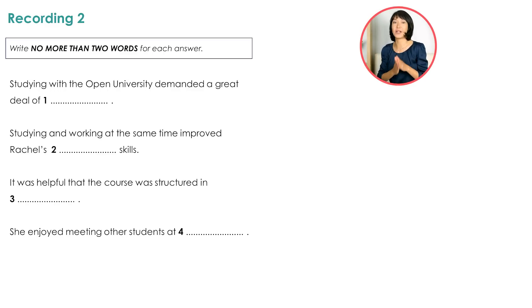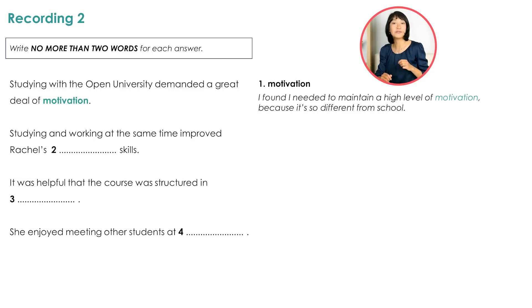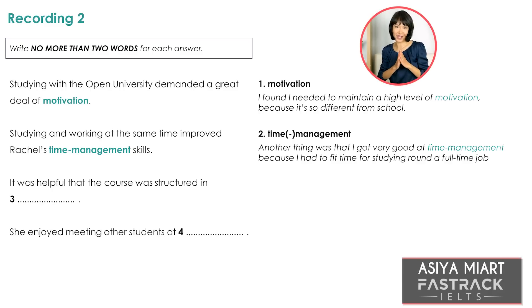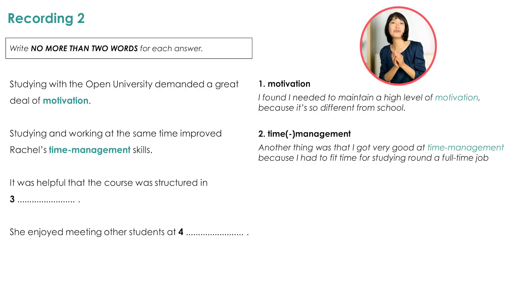Let's check the answers. Number one: Rachel said, I found I needed to maintain a high level of motivation because it's so different from school. The correct answer is motivation. Number two: Another thing was that I got very good at time management because I had to fit time for studying around a full-time job. The correct answer is time management. As you can see, you may or may not use a hyphen. It's very important to spell words correctly. If you make a mistake, your answer is incorrect.